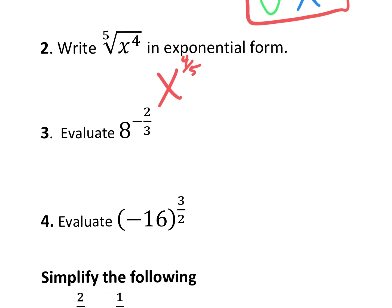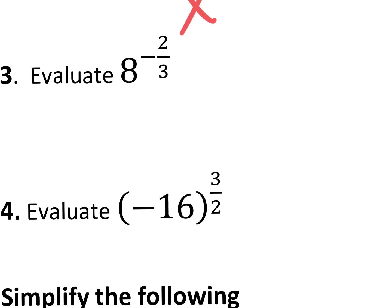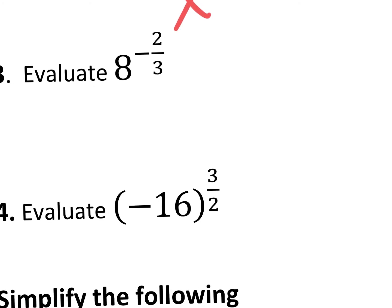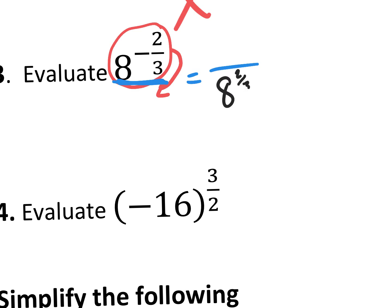Number three: evaluate eight to the negative two-thirds power. We need to remember that negative exponents — you grab them and move them to the other side of the fraction. So we have eight to the negative two-thirds; we move it to the bottom. The eight to the two-thirds goes on the bottom, and there's nothing left on top, giving us one over eight to the two-thirds.